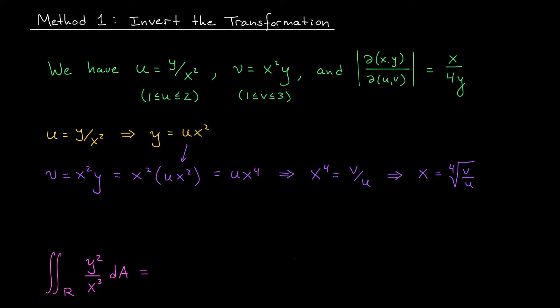Okay, crisis averted. We've now expressed x in terms of u and v, and we're going to try to do the same with y. We know that y is u times x squared, so that's u times the 4th root of v over u squared. When I square my 4th root, I just get a square root, and this expression is going to simplify to root u v.